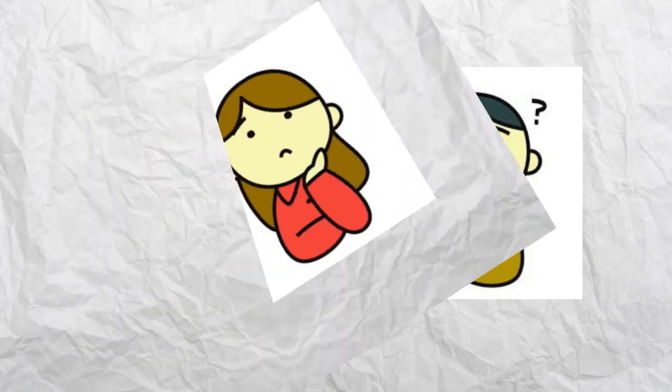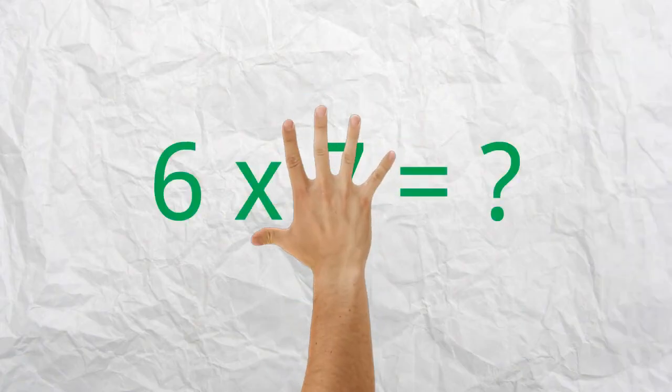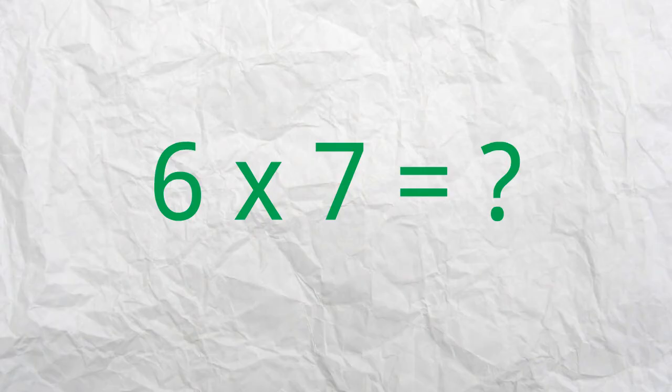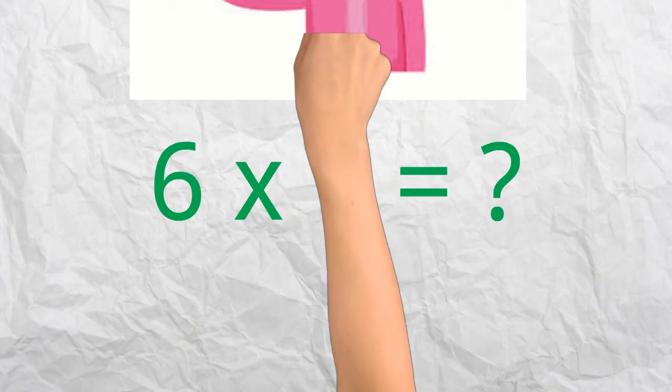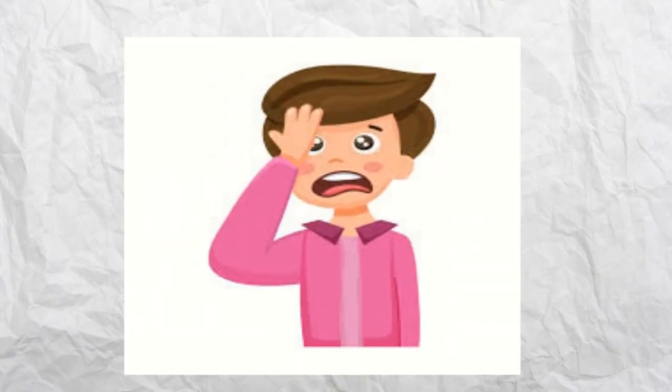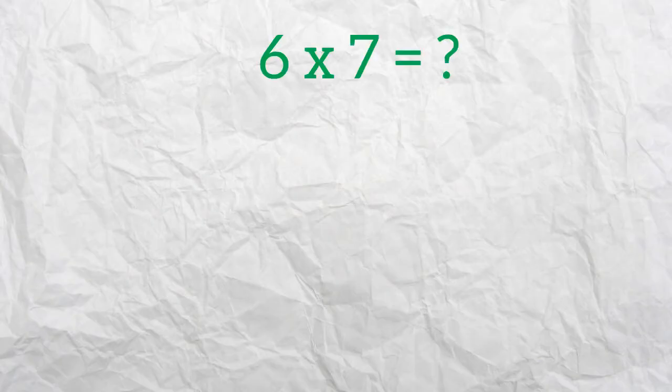If I forget that 6 times 7 is 42, which I might realistically forget if I only learned procedurally by memorizing my facts but not understanding what multiplication is, then I'm out of luck. But if I learned conceptually all about multiplication and understand the concept of multiplication, then when I forget that multiplication fact of 6 times 7, I can use the conceptual reasoning that I had learned to figure out the answer. I could think,